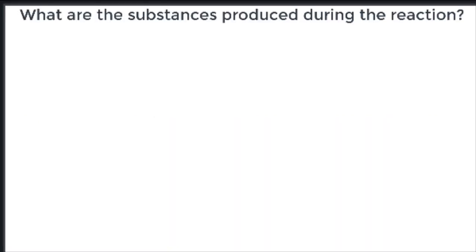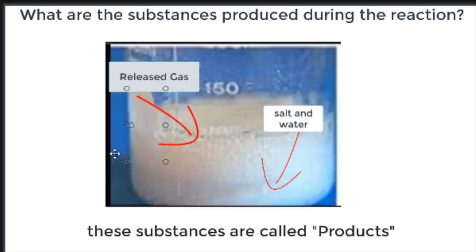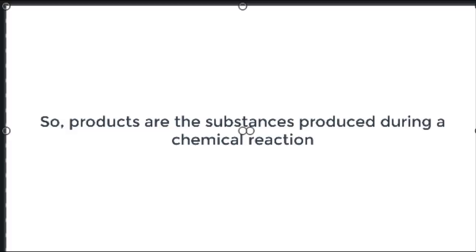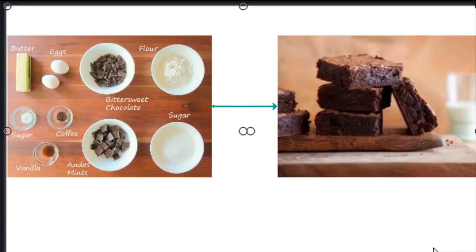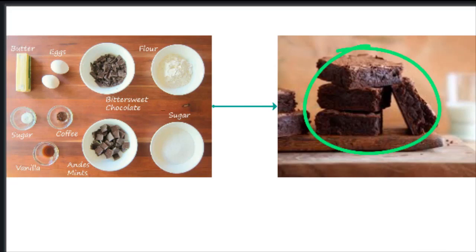What are the substances produced during the reaction? They are the released gas and salt and water. These substances are called the products. So products are the substances produced during the chemical reaction. As another example, these ingredients are transformed into these delicious and sweet brownies.